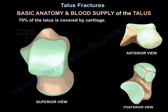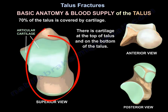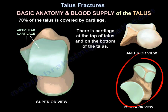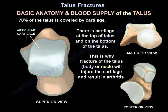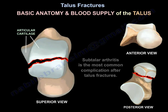70% of the talus is covered by cartilage — at the top and at the bottom. That's why fracture of the talus body or neck will injure the cartilage and result in arthritis. Subtalar arthritis is the most common complication after talus fractures.